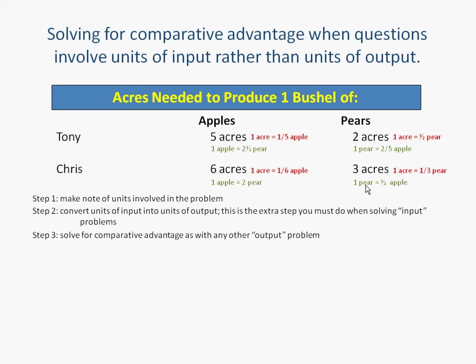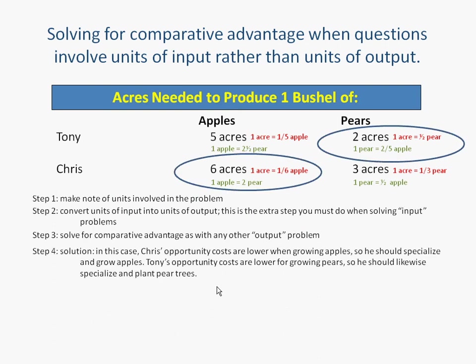Once we've got our opportunity costs, we can compare them. Looking at apples, Chris's opportunity cost is lower — he only gives up two pears when he produces an apple, whereas Tony gives up two and a half pears. Looking at pears, Tony's opportunity cost is lower — when he produces a pear, he only gives up two-fifths of an apple, whereas Chris gives up a whole half of an apple. So Chris has a lower opportunity cost in apples and should specialize in producing those, and Tony has a lower opportunity cost in pears and should specialize in those. If the two of them get together, they can find a trade agreement that's mutually beneficial and have a very lucrative fruit export company.